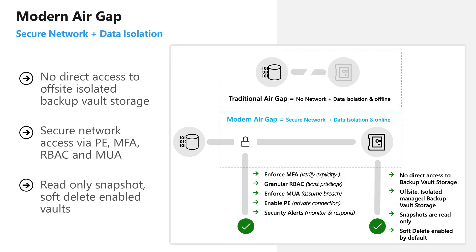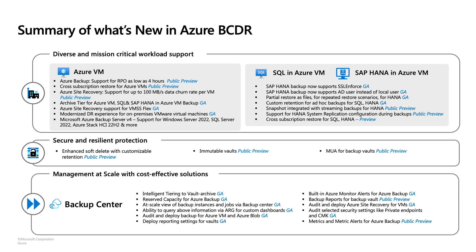We also have modern air gap. This talks about the Recovery Services Vault capability. Traditionally, air gap solutions have no network connectivity and data is completely offline. With Recovery Services Vault, we leverage modern air gap capabilities with secure network connectivity and data that is isolated and online. We enforce MFA (multi-factor authentication), provide granular RBAC capabilities, MUA (multi-user authorization), private endpoints for transferring backups from source to the Recovery Services Vault, and security alerts to monitor everything. These are the new BCDR capabilities available today, covering Azure VM, SQL VM, SAP HANA, and security and Backup Center features.